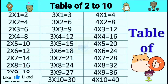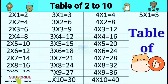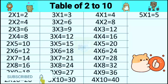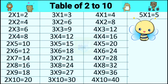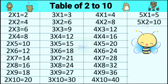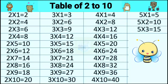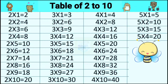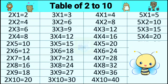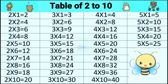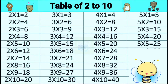Table of five. Five ones are five, five twos are ten, five threes are fifteen, five fours are twenty, five fives are twenty-five.